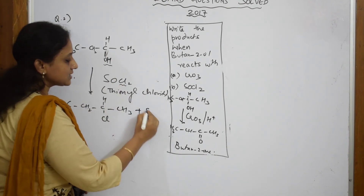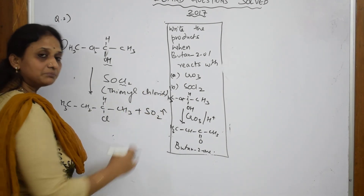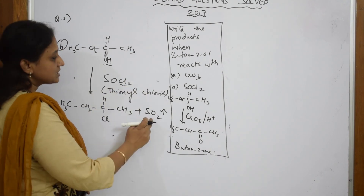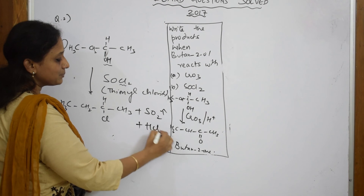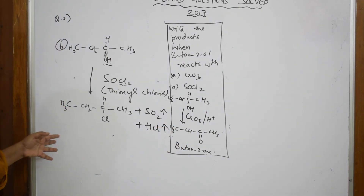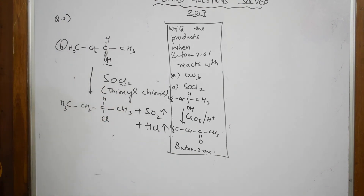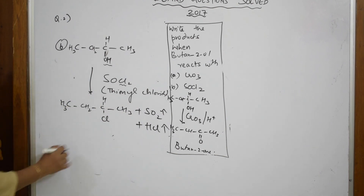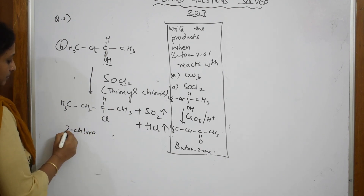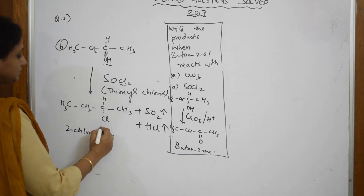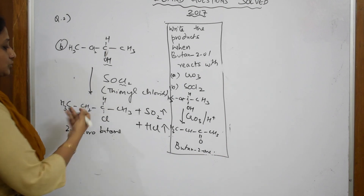The byproducts are sulfur dioxide gas and HCl vapors, both of which vaporize — that is why the leftover product is the purest form of the alkyl halide. So you get an alkyl halide when using thionyl chloride. The product here is CH3–CHCl–CH2–CH3, which is named 2-chlorobutane.